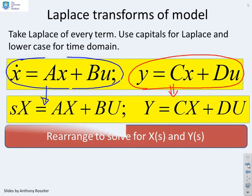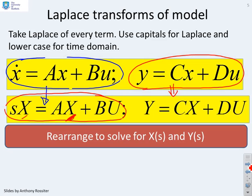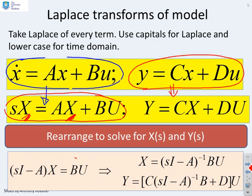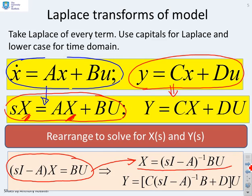Now I can solve these by rearranging this equation which has got X(s) in two places. First I get (sI - A)X = BU, and if I then put the X on its own I get X = (sI - A)^-1 BU. And if I want to get y, all I've got to do is plug this solution for x into this expression, so I'm going to get Y = [C(sI - A)^-1 B + D]U.